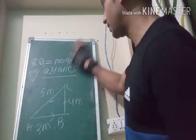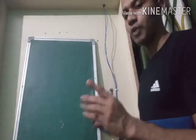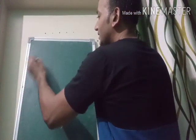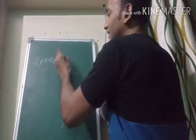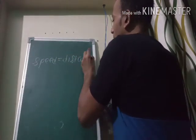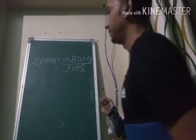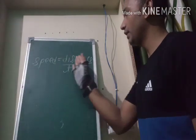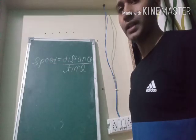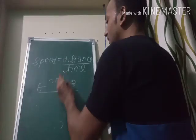Another example of a scalar quantity — one dependent only on magnitude and not direction — is speed. Speed equals distance divided by time. Since distance is a scalar quantity, speed is also a scalar quantity.